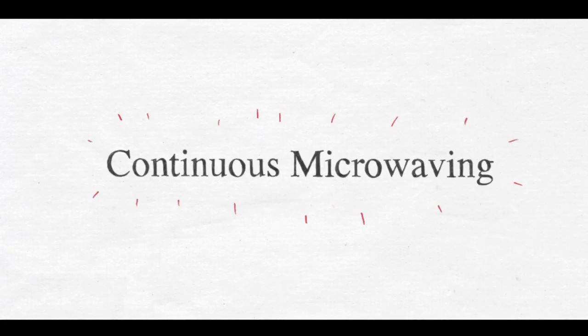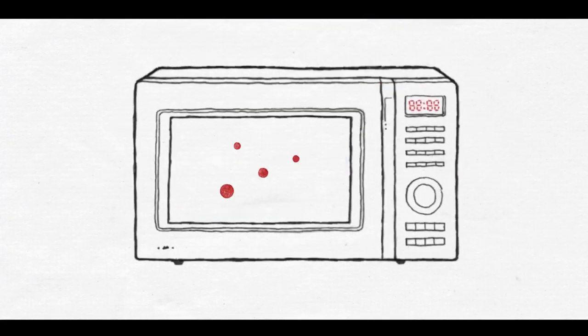Continuous microwaving. Microwaving can be used to change the structure of particles, i.e. puffing them, creating a larger surface area, porosity or reduced bulk density.